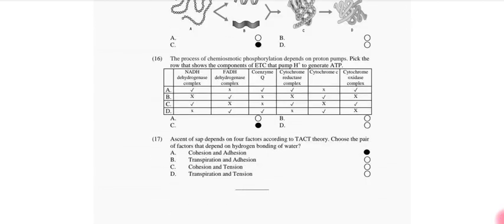The process of chemiosmotic phosphorylation depends on proton pumps. Pick the row that shows component of ETC that pump H-positive to generate ATP. So that is option C. Ascent of sap depends on four factors according to TAC theory. Choose the pair of factors that depend on hydrogen bonding of water. That is cohesion and adhesion.